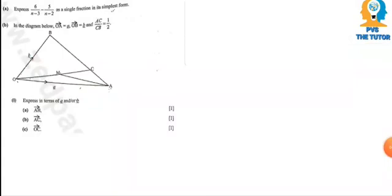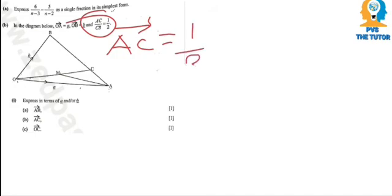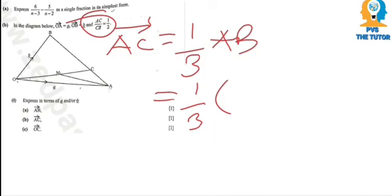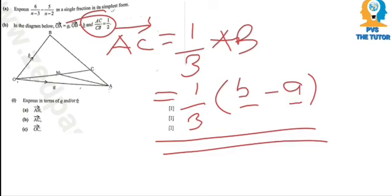Now when we look at AC, they are saying find AC. Now from the ratio that we've been given, we know that AC is 1 over 3 of AB. Therefore, it's 1 over 3. AB, we found that it was B minus A. So this is what AC is. That's all.